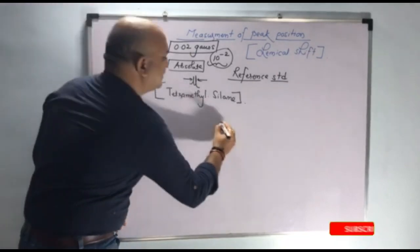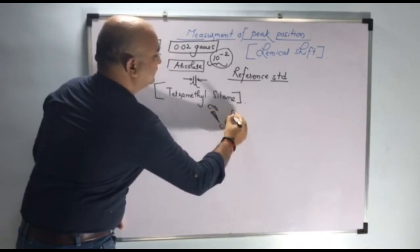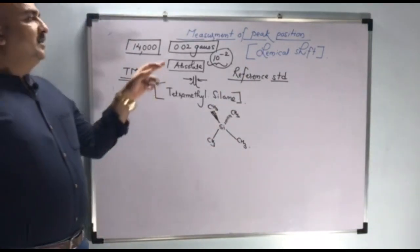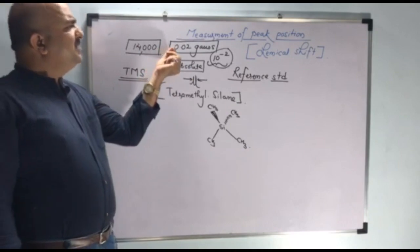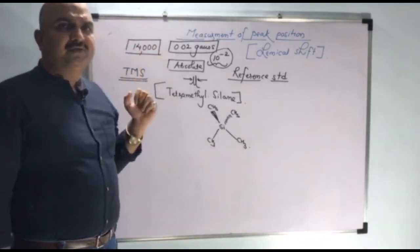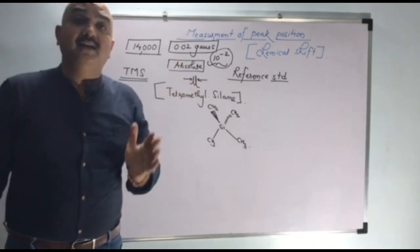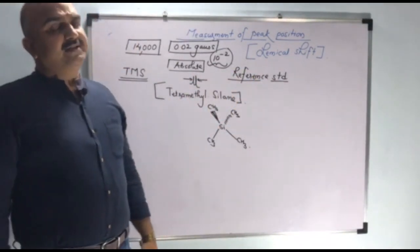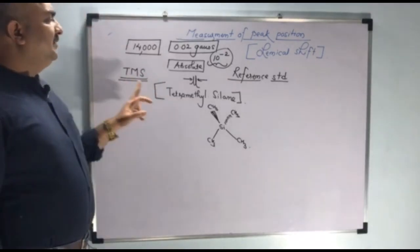The structure of tetramethylsilane has silicon at the center, which is SP3 hybridized. We cannot measure absolute peak position because two peaks may differ by only 0.02 Gauss while the instrument produces 14,000 Gauss. So we use a relative term in the form of a reference standard. That reference standard is tetramethylsilane, TMS. We have different types of reference standards, but we have chosen TMS specifically.